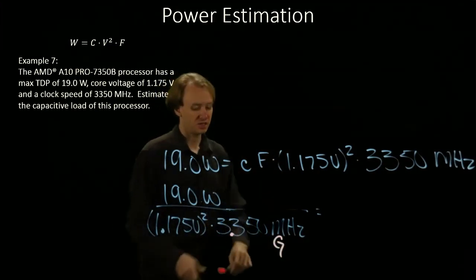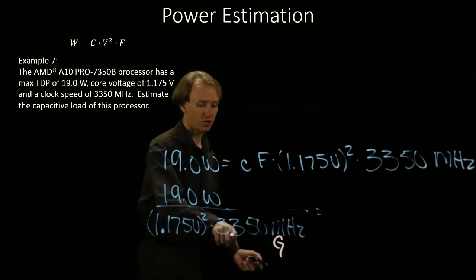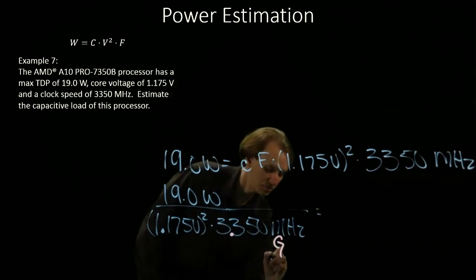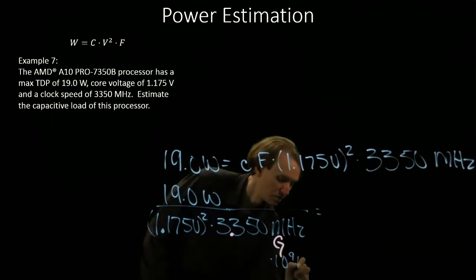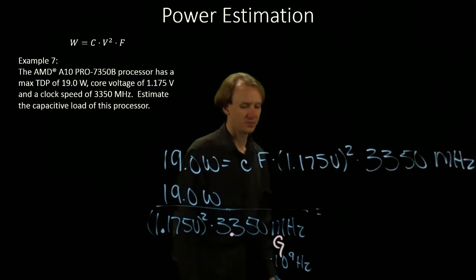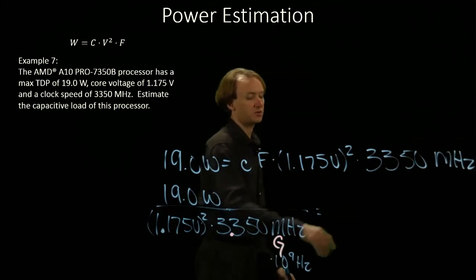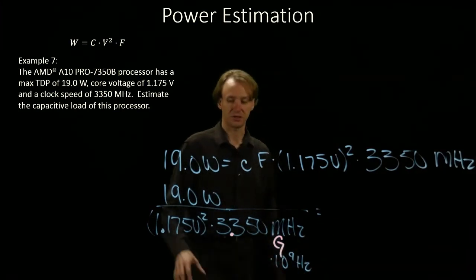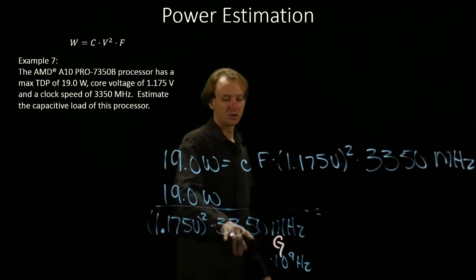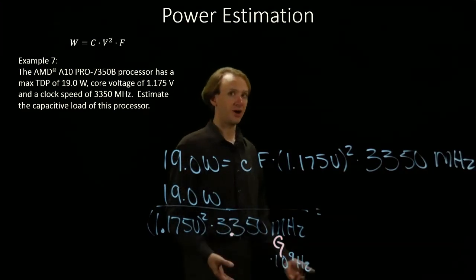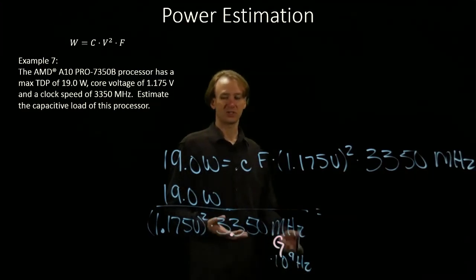Because then I am getting something, a smallish number, times 10 to the ninth hertz. And if I pull this out, I'm going to get something that's 19 divided by 1.175 squared times 3.35. Which is a reasonably small number.